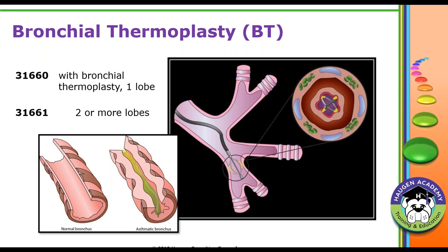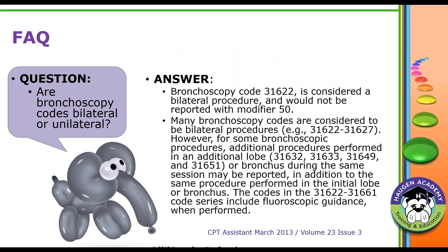A CPT Assistant FAQ addresses whether bronchoscopy codes are bilateral or unilateral. Code 31622, the base diagnostic code, is considered a bilateral procedure — do not report with modifier 50. Bronchoscopy codes are generally considered bilateral. However, some bronchoscopy codes do allow you to report an additional procedure if performed on an additional lobe or additional bronchus during the same session, which is why those add-on codes exist.